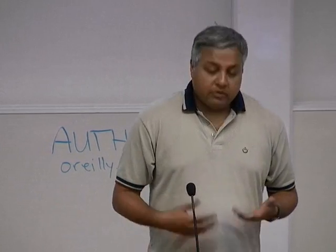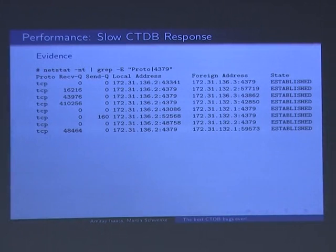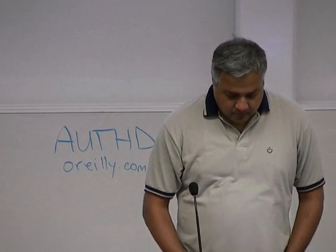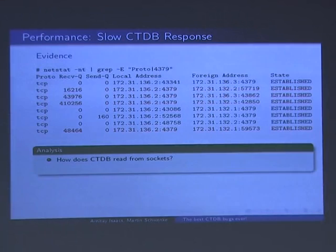There are many ways to start looking at it. One simple way is to look at how many connections we have. This is a four-node cluster. CTDB uses port 4379 TCP, so we grep for all that. Do you notice anything? Yes — there is a large receive queue. You can see lots of bytes in the receive queue in all the active connections. This brings the question: how does CTDB read packets from the socket? We ran strace and found the daemon is running lots of read calls.